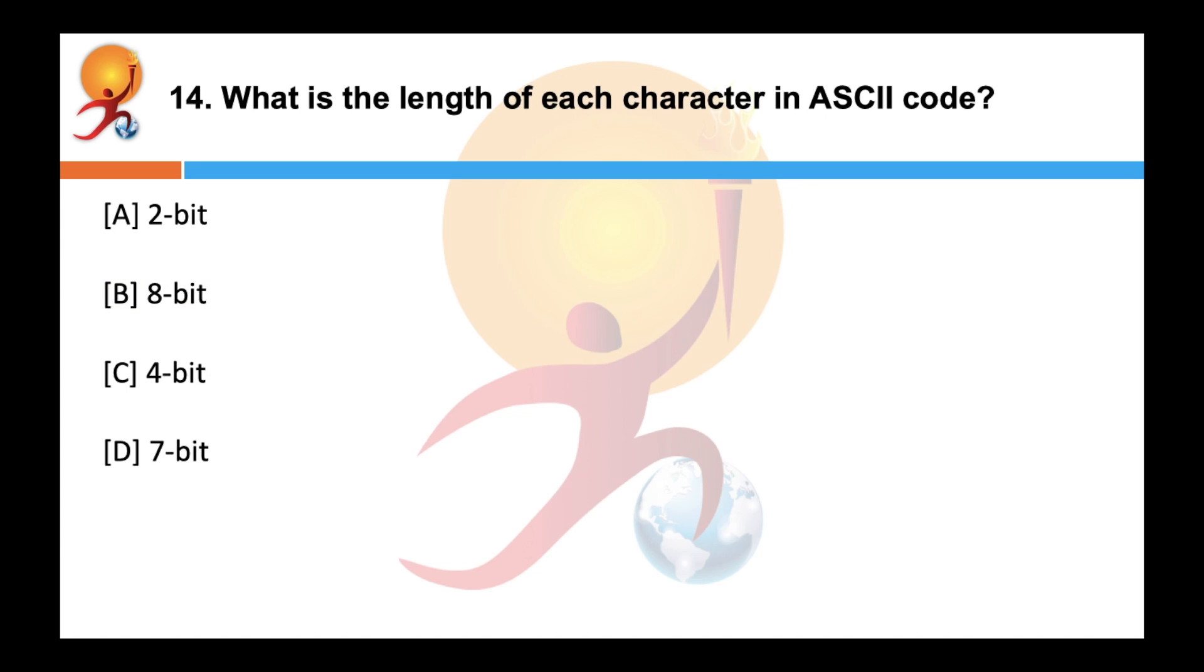What is the length of each character in ASCII code? The correct answer is D, 7 bit. ASCII code is used to represent digital data. In ASCII code, each character is represented by a 7-bit code to minimize the cost associated with data transmission.